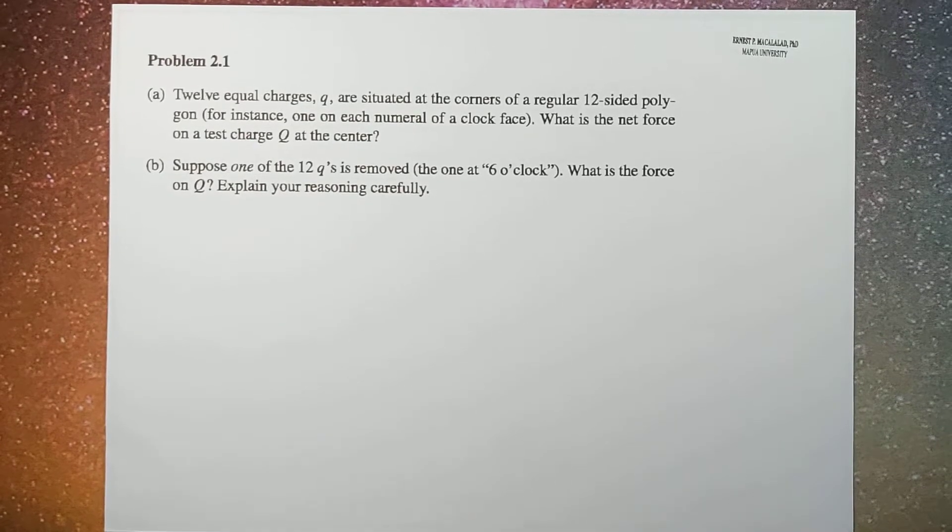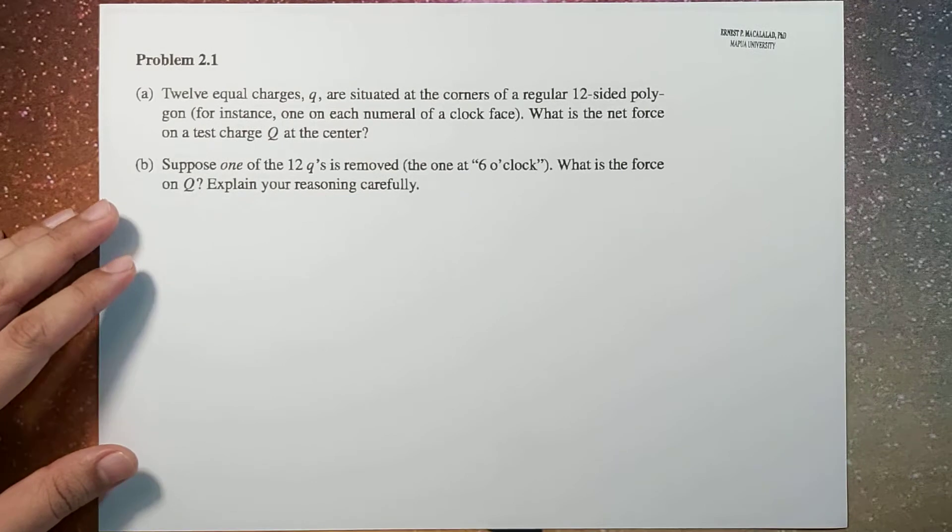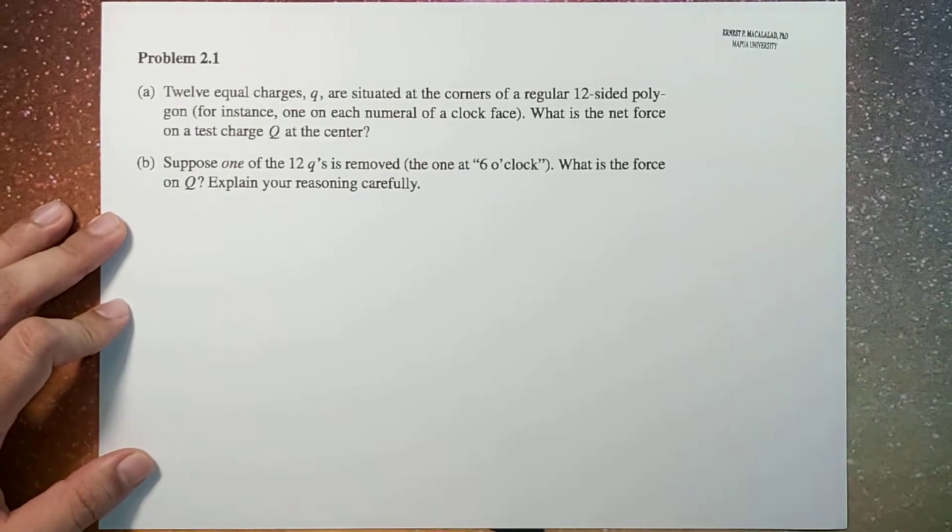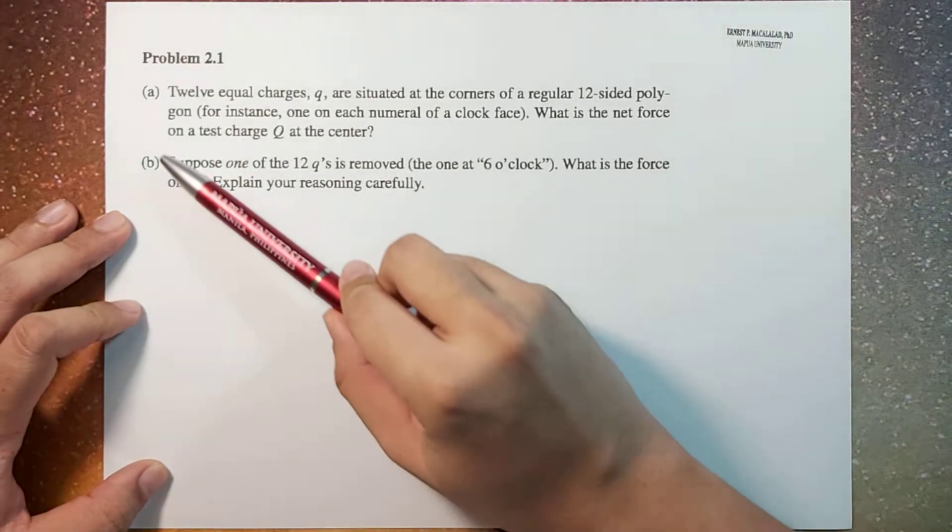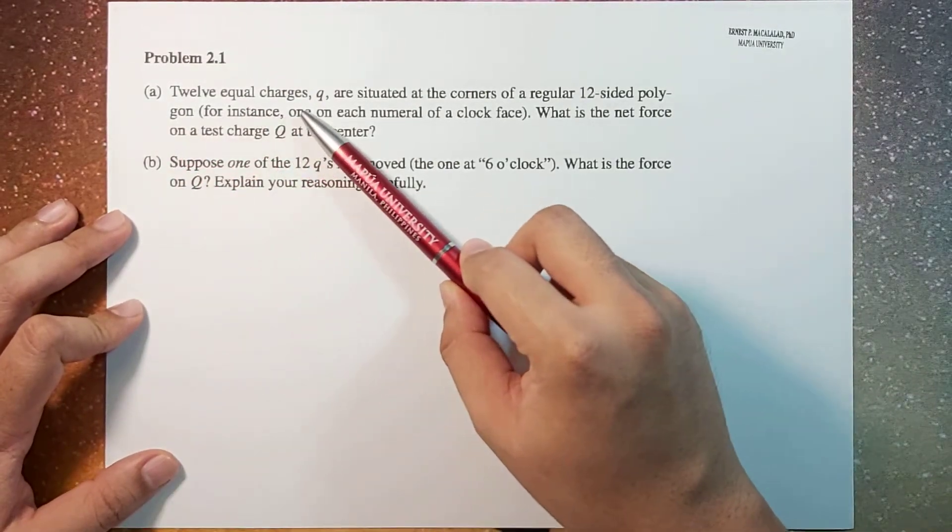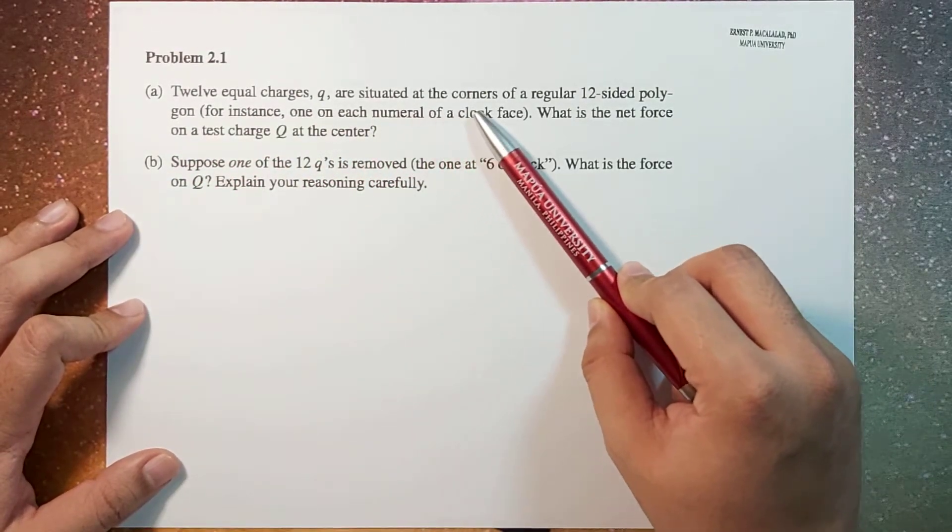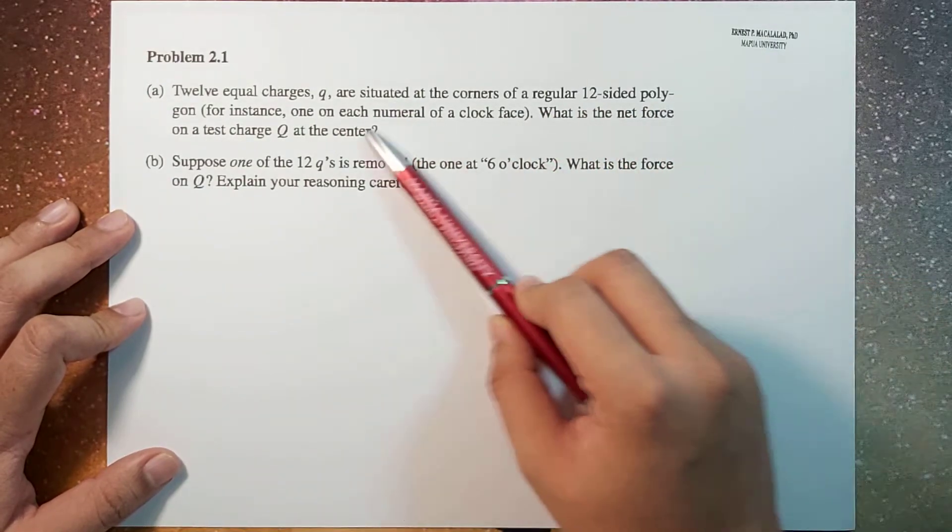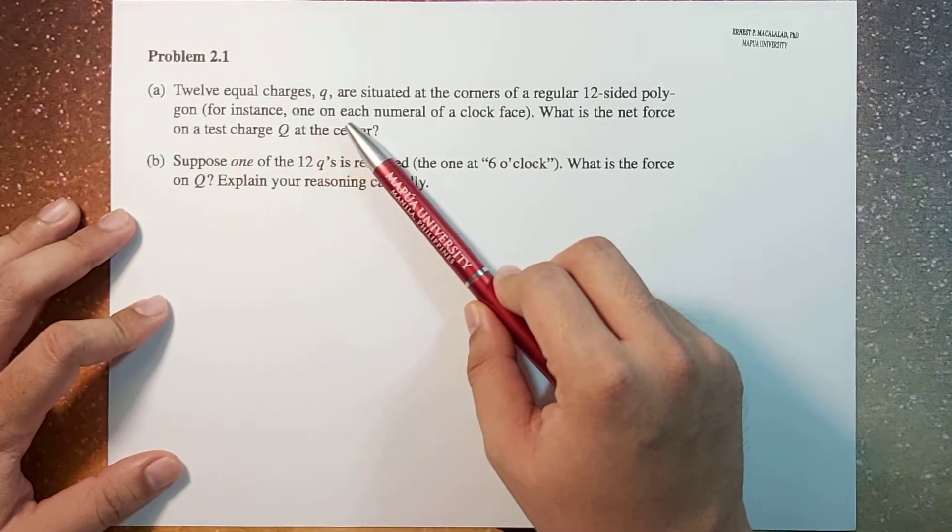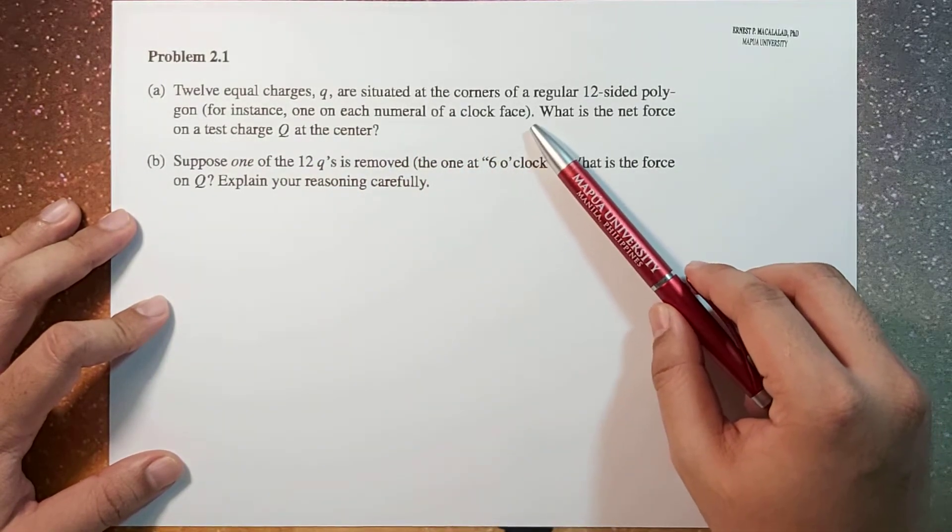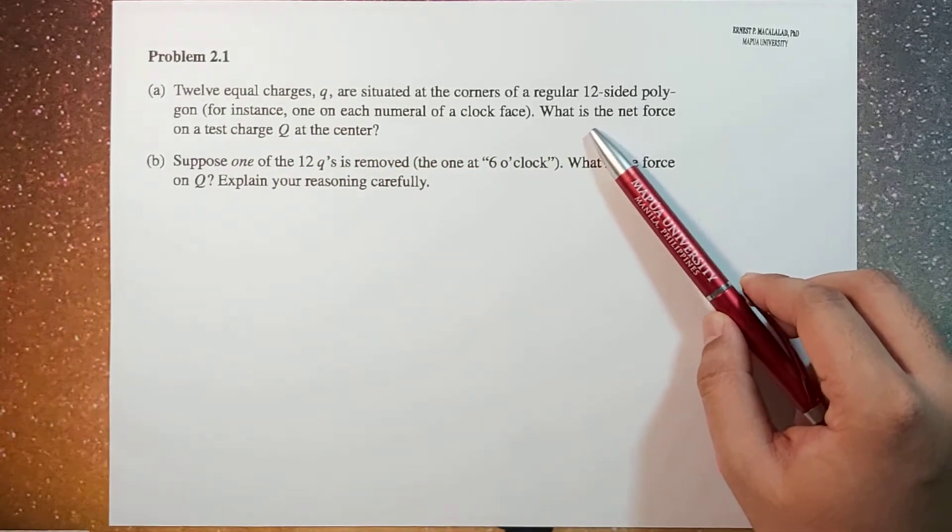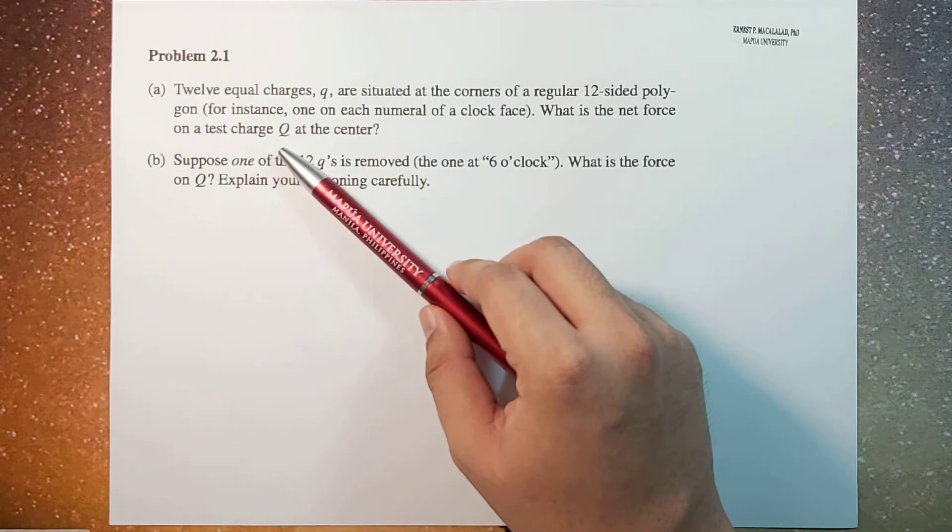What's up guys, it's me Sir Earnest, and today we're going to solve Problem 2.1 of Griffith's fourth edition. The problem reads: for letter a, 12 equal charges q are situated at corners of a regular 12-sided polygon (for instance, one on each numeral of a clock face). What is the net force on a test charge capital Q at the center?